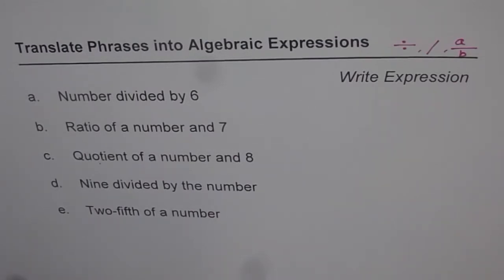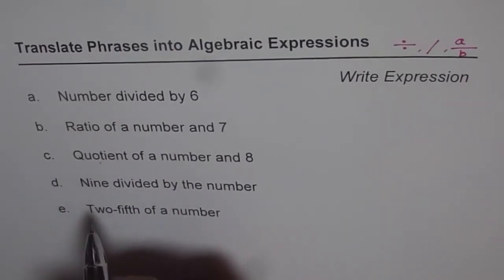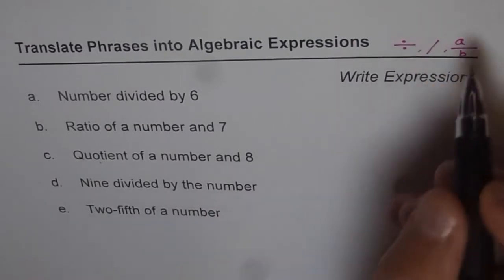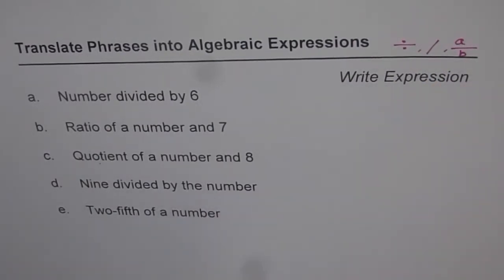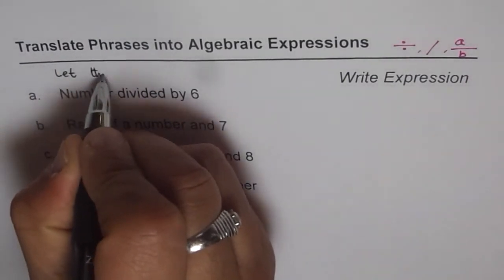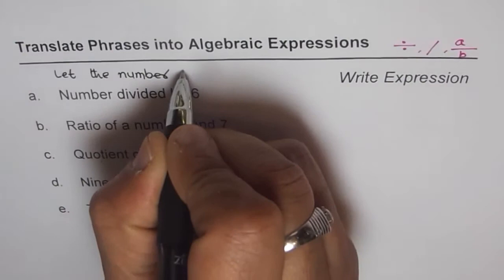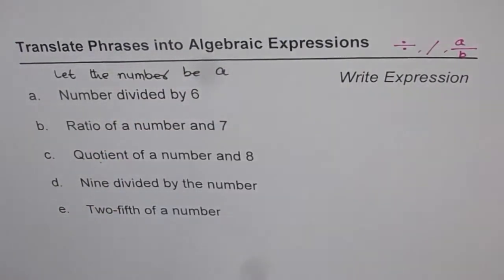So first step for us is what? Yes, define the variable. So let the number be, what do you want that variable? Let us say let the number be a. I will use the symbol a this time. So a is our number this time.